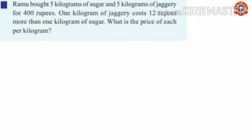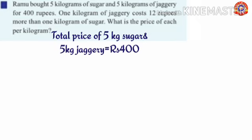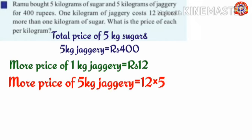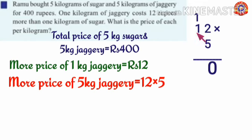The total price of 5 kg sugar and 5 kg jaggery is 400 rupees. 1 kilogram of jaggery costs 12 rupees more than 1 kilogram of sugar. To find the extra price of jaggery for 5 kilograms, multiply 12 by 5. 12 into 5: 5 into 2 is 10, write 0 carry 1; 5 into 1 is 5, plus 1 is 6. So the result is 60.